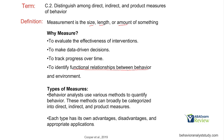We use various methods to quantify behavior. Behavior is this abstract thing that we're describing in words. When we count it, for instance, we're just putting a number on the behavior. So we're looking at direct, indirect, and product measurement. Each type has advantages, disadvantages, and applications.